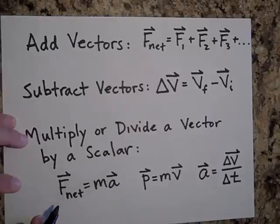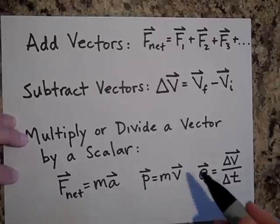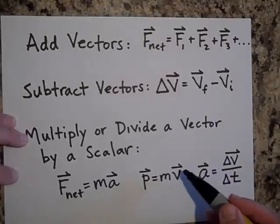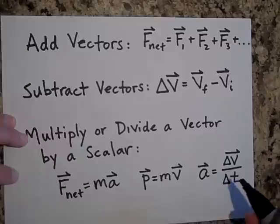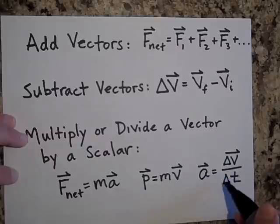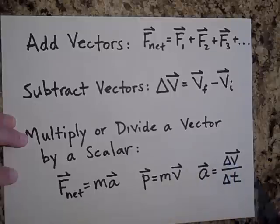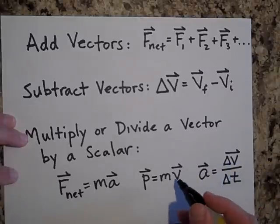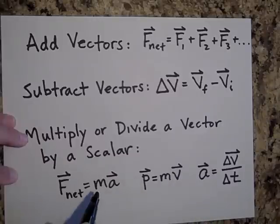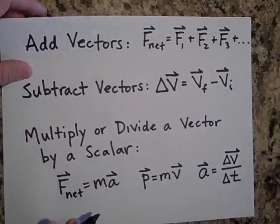The scalar just changes the size of the vector and the units. So momentum and v are always in the same direction, and a and delta-v are always in the same direction. Dividing or multiplying by a scalar is not too difficult, but I'd like to tell you about two ways that we multiply vectors.